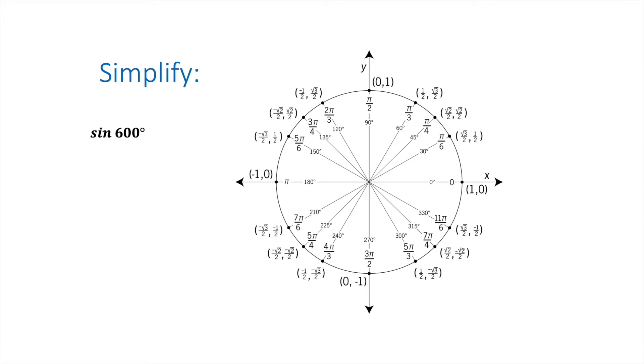600 degrees, we just have to remember that 600 can be broken down. The unit circle is really good for measuring these, but the unit circle goes up to 360 degrees.